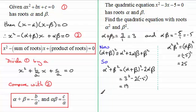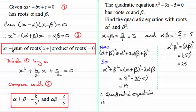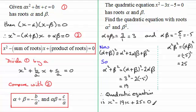Therefore the quadratic equation we're looking for is x² minus the sum of the roots times x, plus the product of the roots: x² − 19x + 25 = 0. We've been able to develop this quadratic equation based on the roots, without physically finding what alpha and beta were.